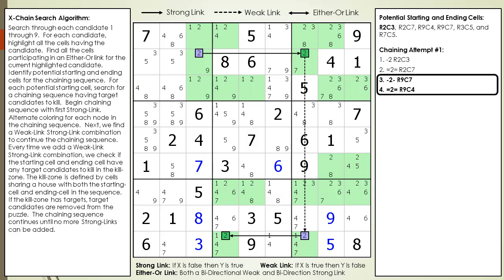We add the first weak link-strong link combination as shown. We have a weak link between cell 2, 7 and cell 9, 7, and we have a strong link between cell 9, 7 and cell 9, 4 as shown. Every time we add a strong link to the chaining sequence, we check to see if any target candidates can be killed. The kill zone is defined by cells that share a house with the starting cell and the current ending cell in the chaining sequence. For the current starting and ending cells in the chaining sequence, the kill zone is currently highlighted in red.